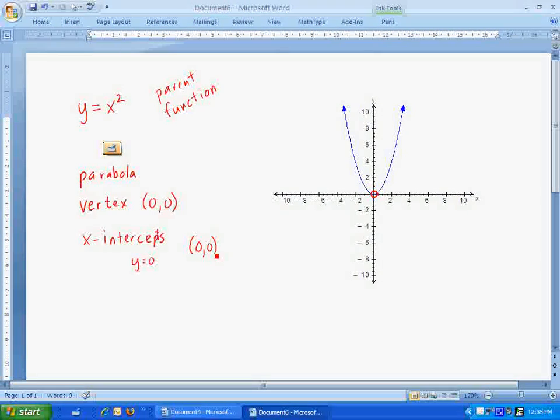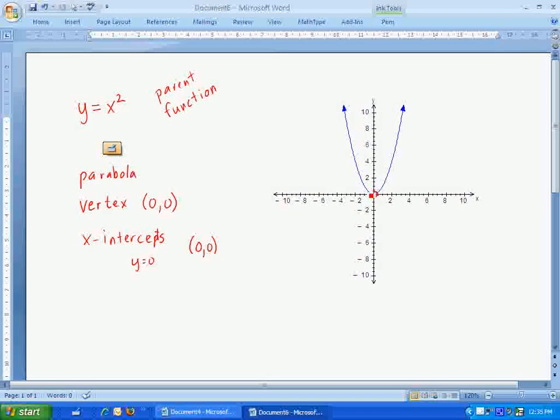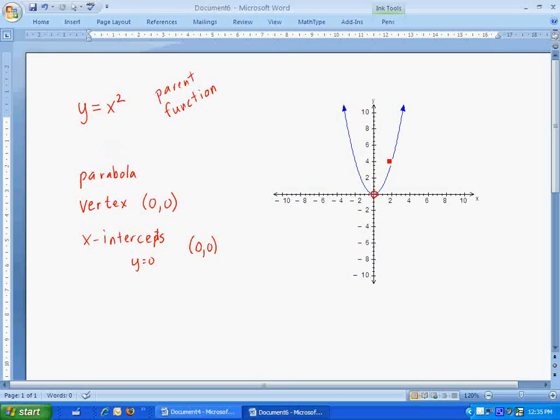We always name these with a point. In this case, we only have one x-intercept because it goes down, touches the graph, and then it increases again.